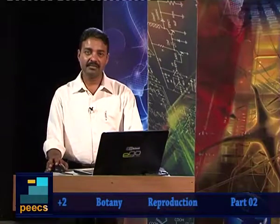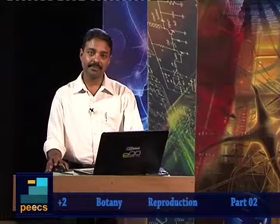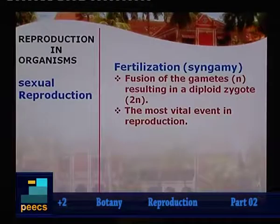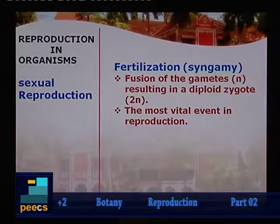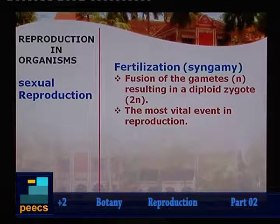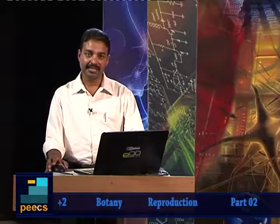Fertilization, also called syngamy, is the fusion of gametes — male gametes fusing with female gametes. The haploid male gamete plus the haploid female gamete leads to the formation of a diploid structure known as the zygote. This event is technically called fertilization, the most vital event in sexual reproduction.